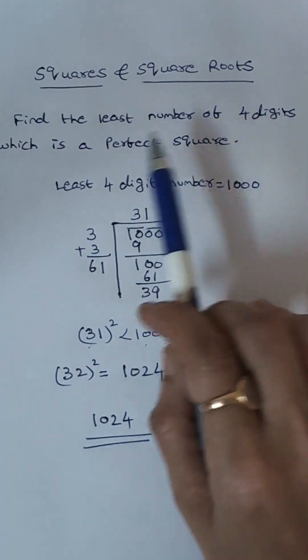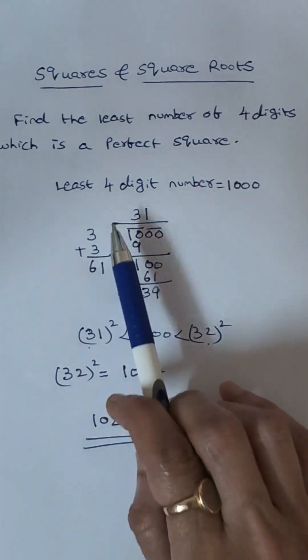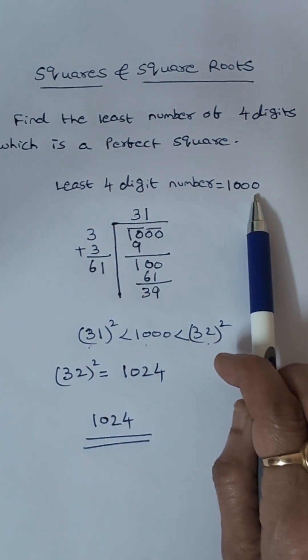We have to find the least number of 4 digits which is a perfect square. Now first write the least 4 digit number. So the least 4 digit number is 1000.